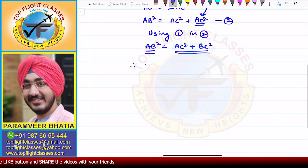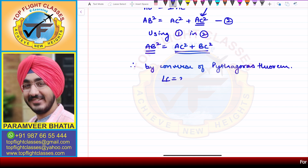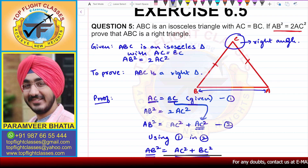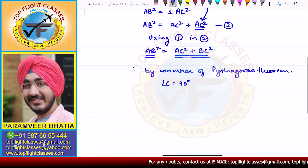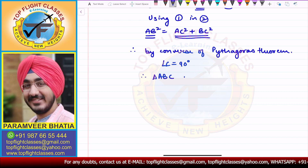Therefore, by the Converse of Pythagoras theorem, I will get that angle C is equal to 90 degrees. And if angle C is 90 degrees, then this triangle is a right triangle. Therefore, triangle ABC is a right triangle.